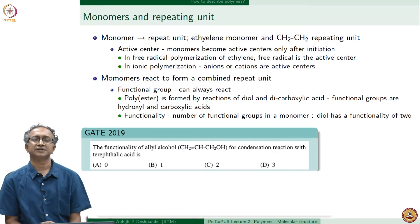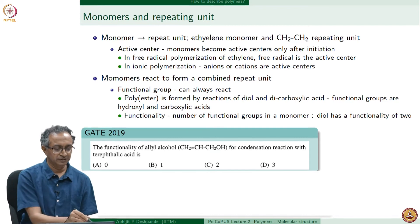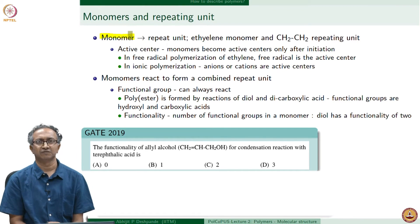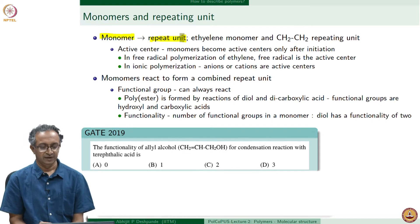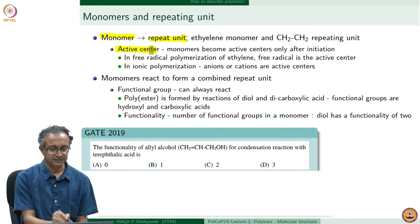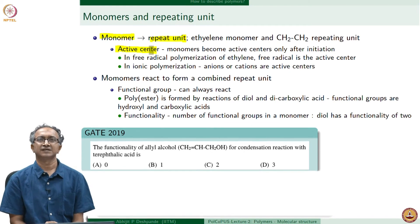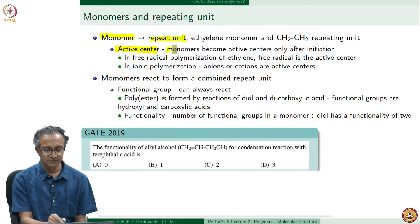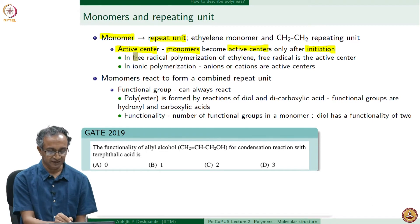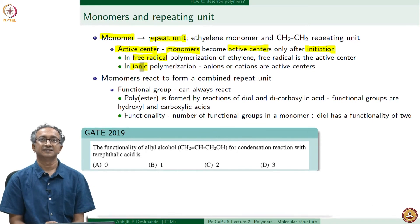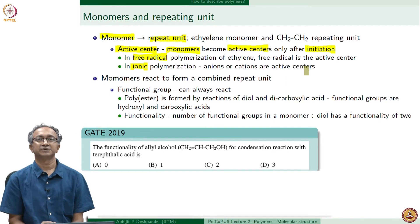Let us continue looking at nomenclature. A monomer is the building unit of a polymer. Once the polymer is built, something keeps getting repeated — the repeating unit. In case of polyethylene, the monomer and the repeating unit are the same. In these types of polymers, there is an active center: ethylene, which cannot really react with itself, has to be activated. Monomers become active centers due to initiation — when we add an initiator, which can be a free radical or an ion, the monomer becomes activated and can start combining with other monomers. In such polymers, the monomers and repeating units are identical.